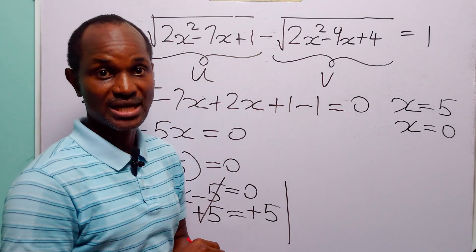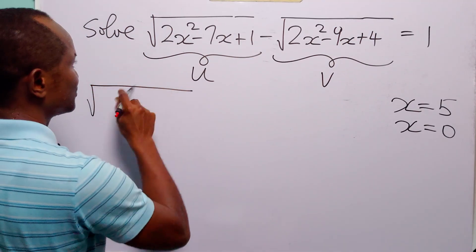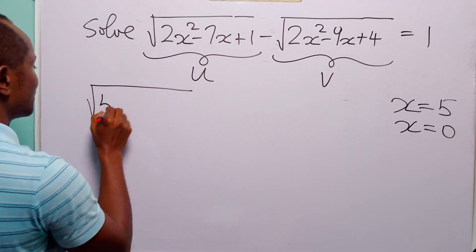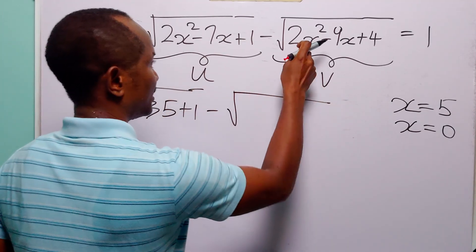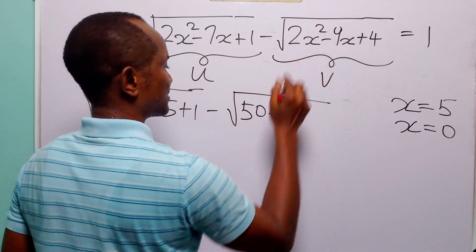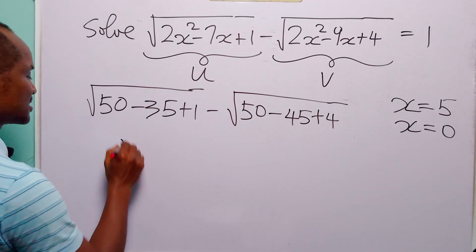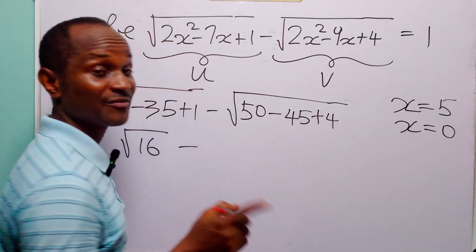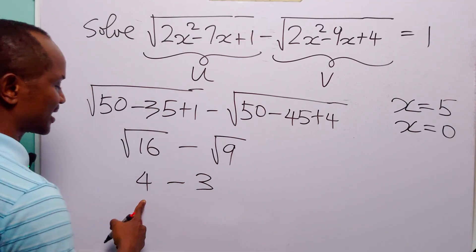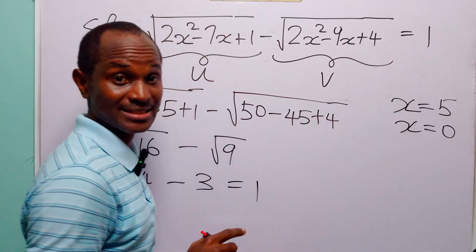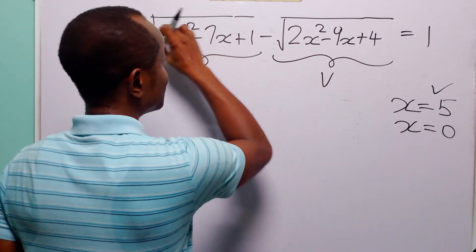Now we have two values of x that apparently satisfy the original equation. Let us make sure. When we substitute 5 for x: 2 times 25 is 50, minus 35 plus 1 gives 16, so we get the square root of 16. And 50 minus 45 plus 4 gives 9, so we get the square root of 9. The square root of 16 is 4 and the square root of 9 is 3, and 4 minus 3 is equal to 1, which is what we have on the right-hand side. So this value of x satisfies the original equation.